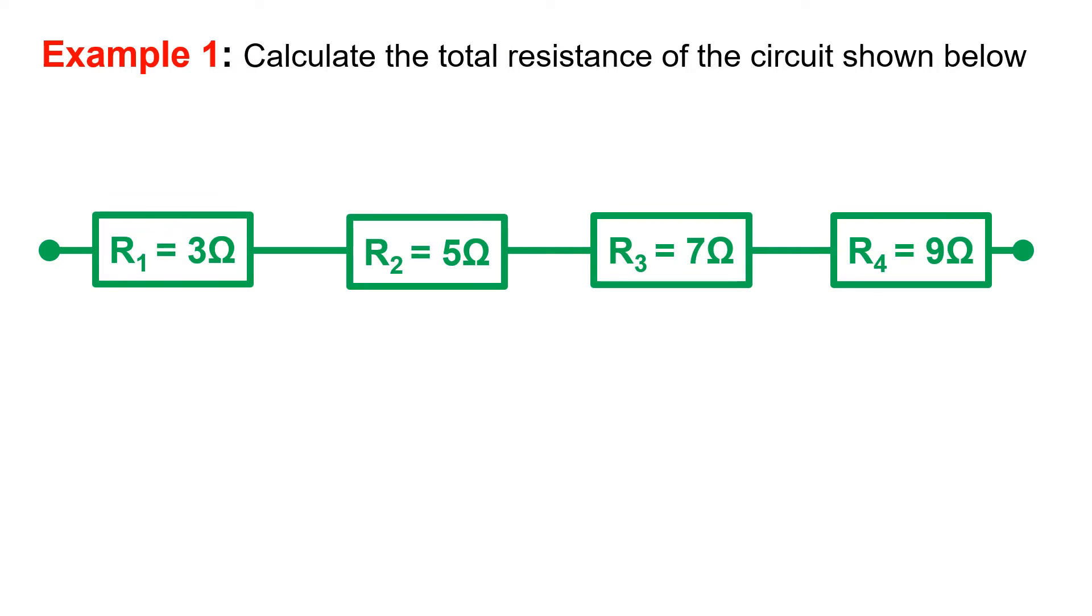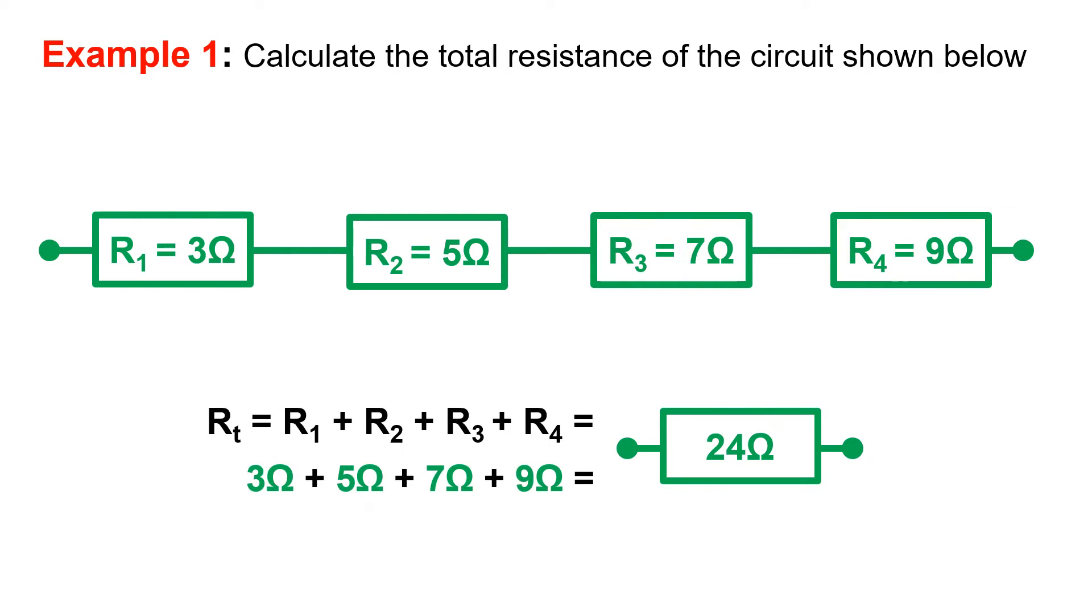In this example, you will see that we have four resistors in series. In a series circuit, these are simply added together: 3 ohms plus 5 ohms plus 7 ohms plus 9 ohms equals 24 ohms.